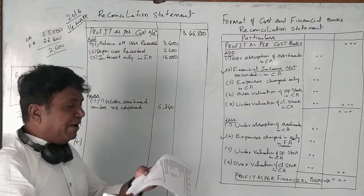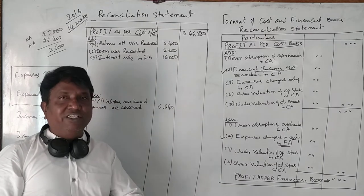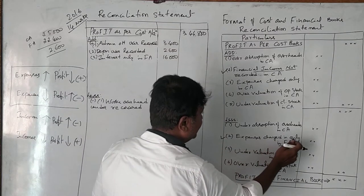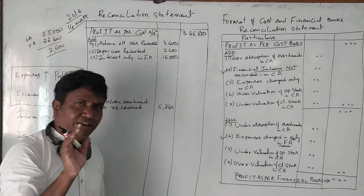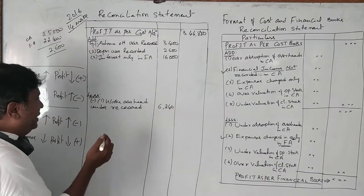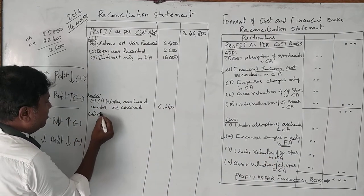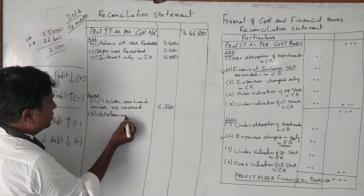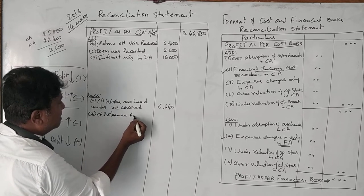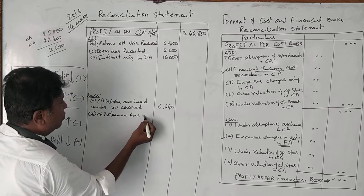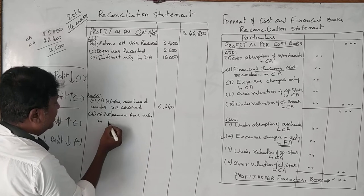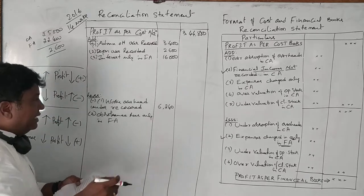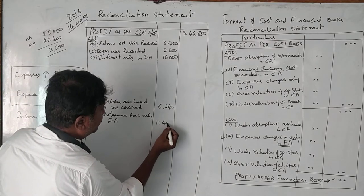Next, obsolescence losses are charged in financial accounts only. Any expenses or losses charged only in FA should be deducted. So obsolescence loss only in FA should be deducted: 11,400 rupees.